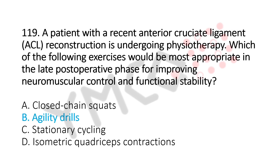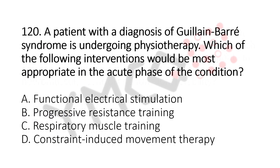Now let's move to question number 120. A patient with a diagnosis of Guillain-Barré syndrome is undergoing physiotherapy. Which of the following interventions would be the most appropriate in the acute phase of the condition? Option A, functional electrical stimulation. Option B, progressive resistance training. Option C, respiratory muscle training. Option D, constraint induced movement therapy. And the answer is Option C, respiratory muscle training.